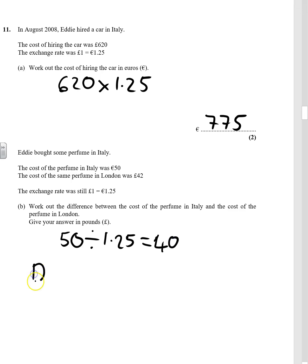Work out the difference. The difference is £42 minus £40 – £42 because that's how much you paid in London. So it's a difference of £2.